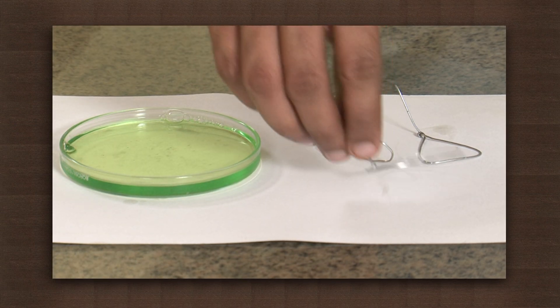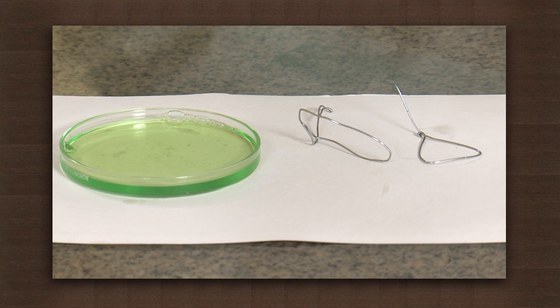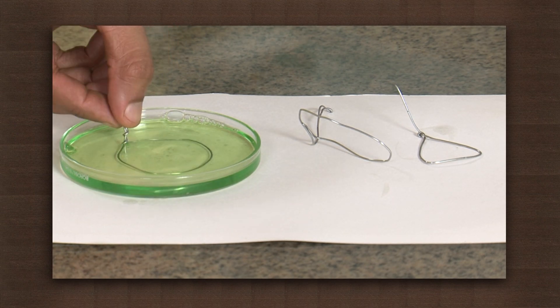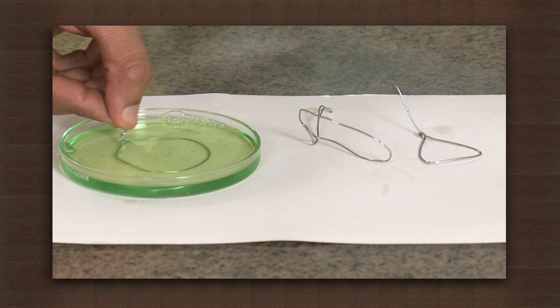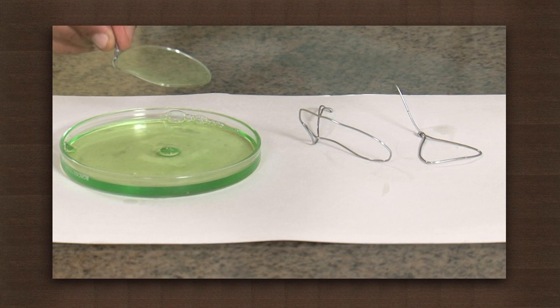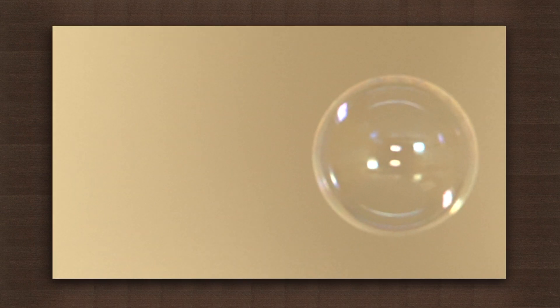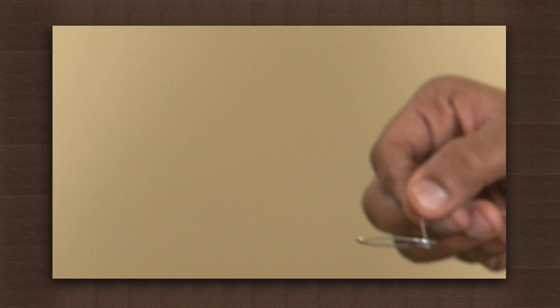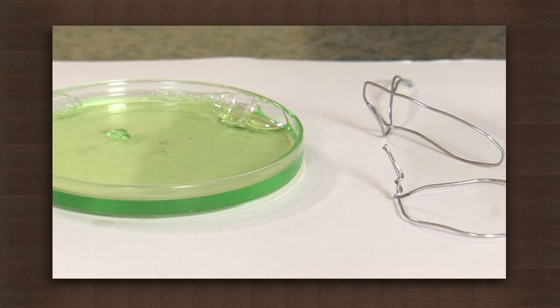We will first take a round shaped wire loop. Dip the wire loop in the soap solution. You will get the film on the loop. Blow the film and the soap bubble will come out. Observe the shape of the bubble — it is round. So a round loop gives a round bubble.